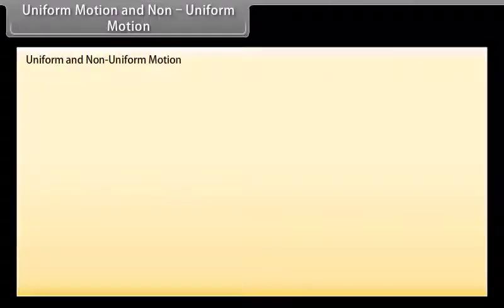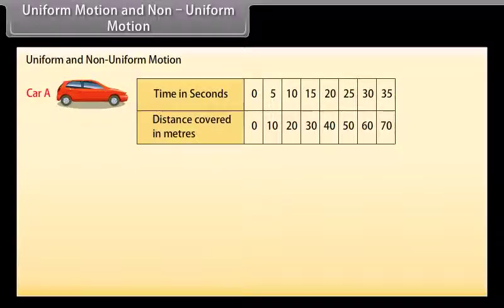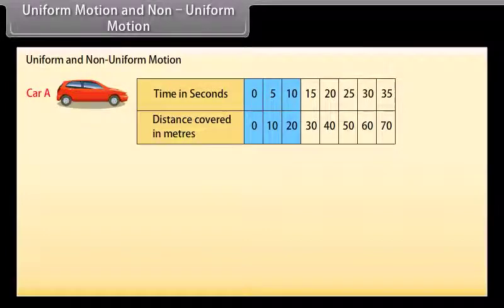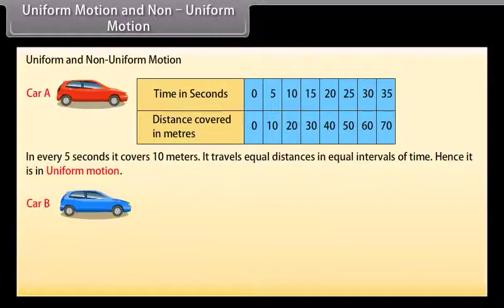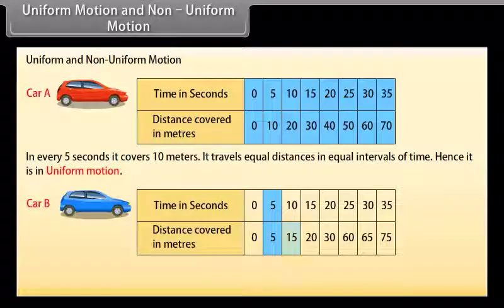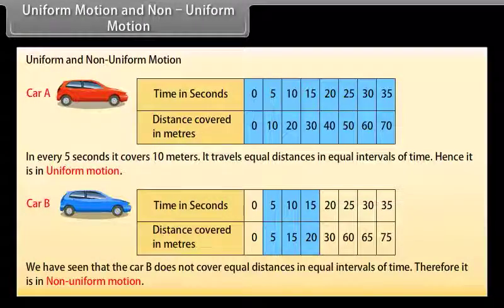Uniform motion and non-uniform motion. To understand uniform and non-uniform motion, let's take one example. Look at this table — this is the distance covered by car A. In 0 seconds it covers 0 meters, in 5 seconds it covers 10 meters, in 10 seconds it covers 20 meters, and so on. In every 5 seconds it travels equal distances in equal intervals of time, hence it is in uniform motion. Car B covers 5 meters in 5 seconds, 15 meters in 10 seconds, 20 meters in 15 seconds. Car B does not cover equal distances in equal intervals of time, therefore it is in non-uniform motion.